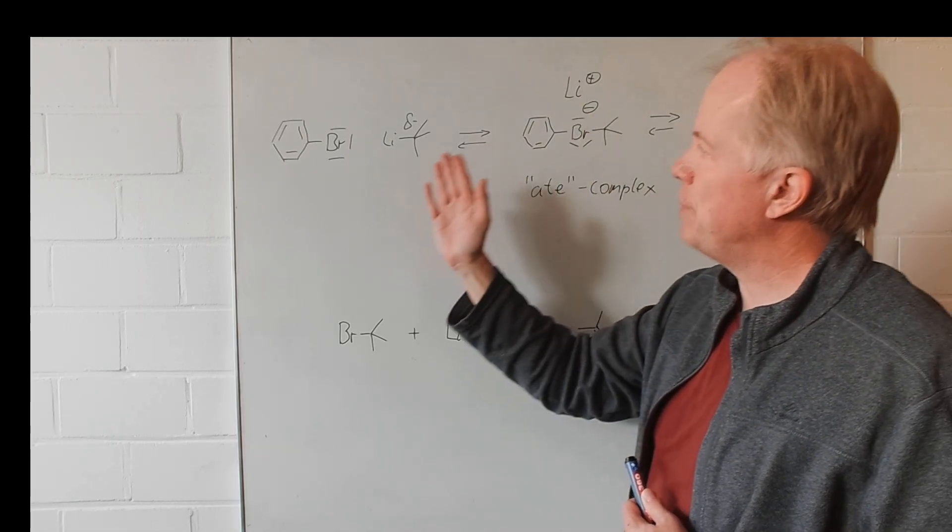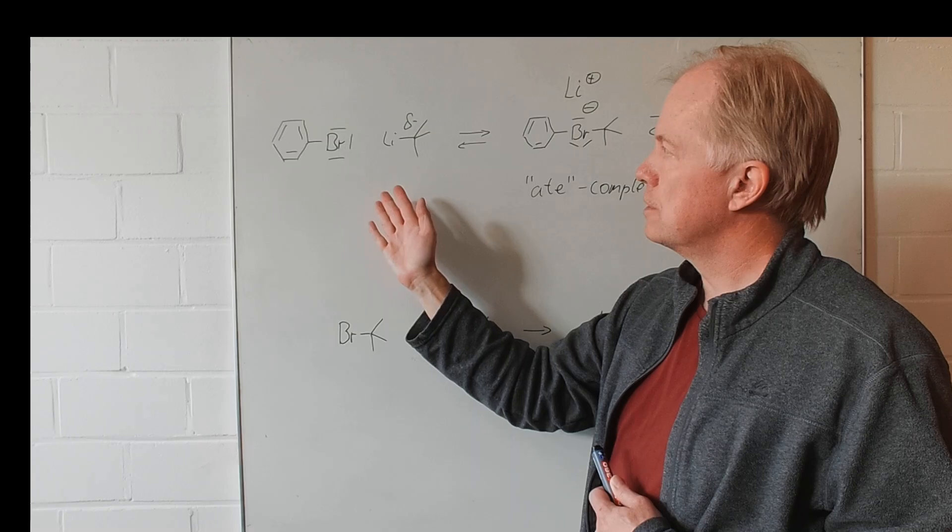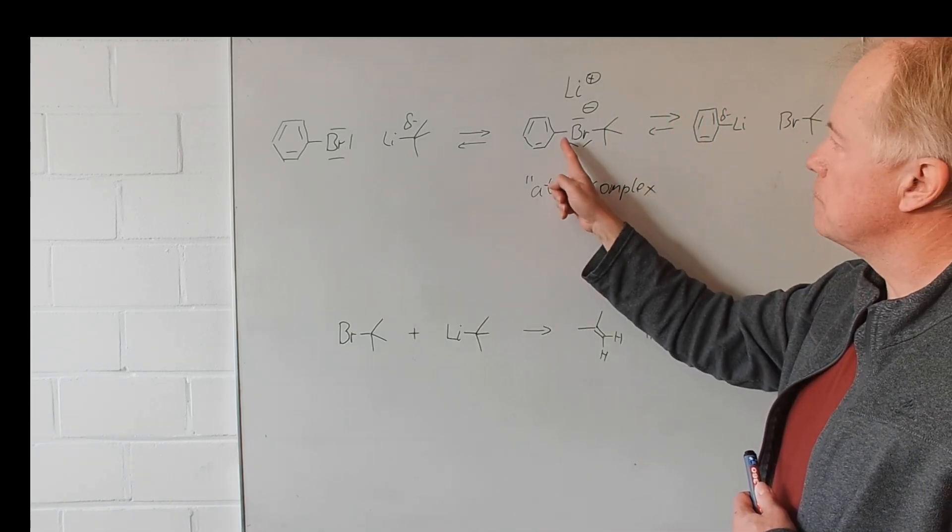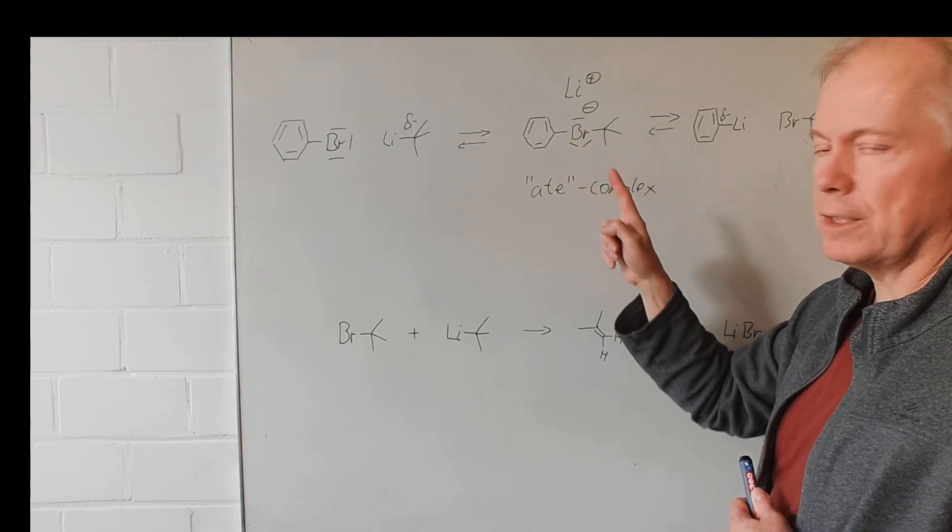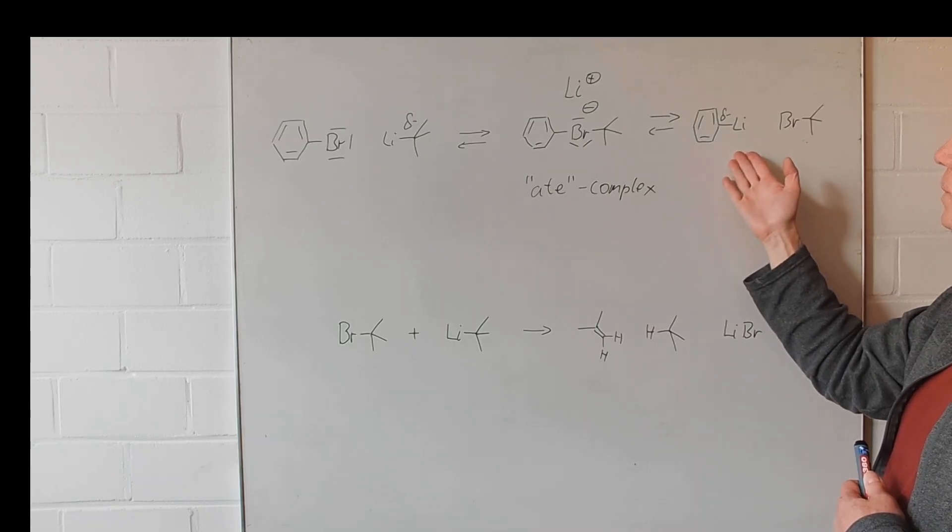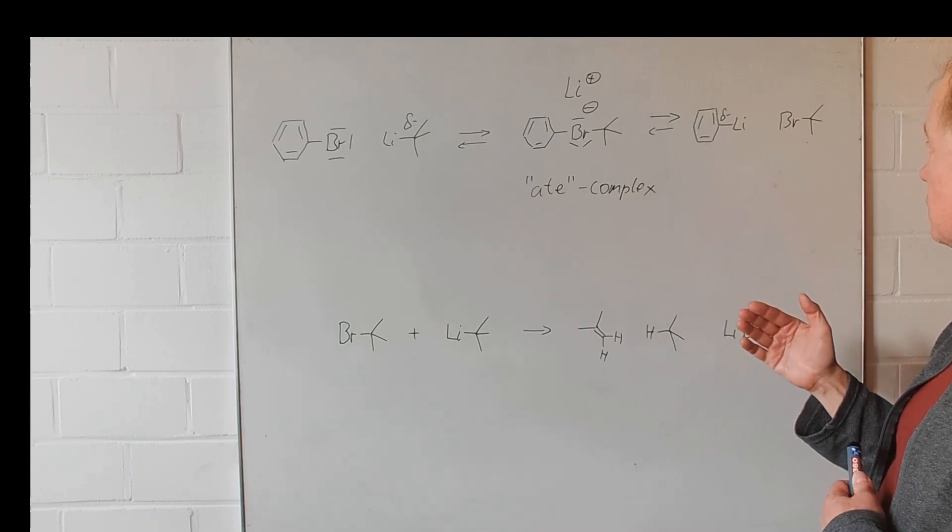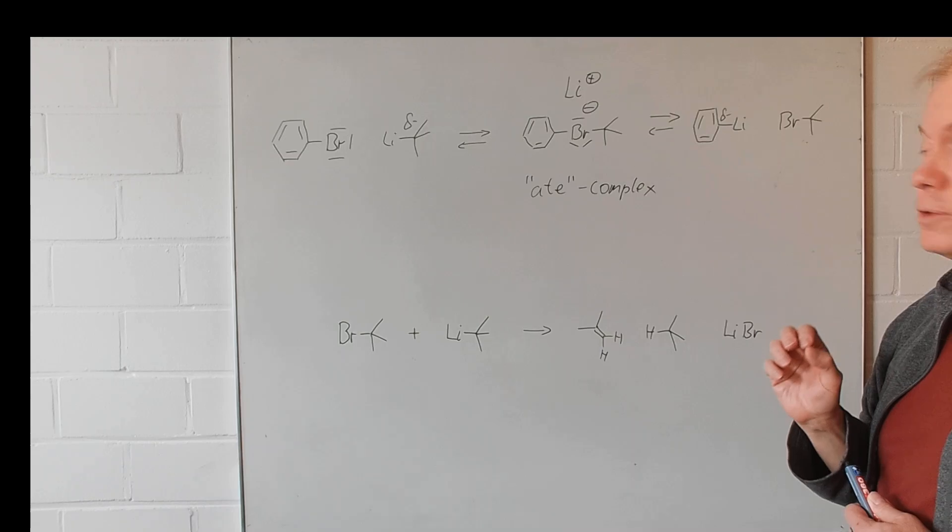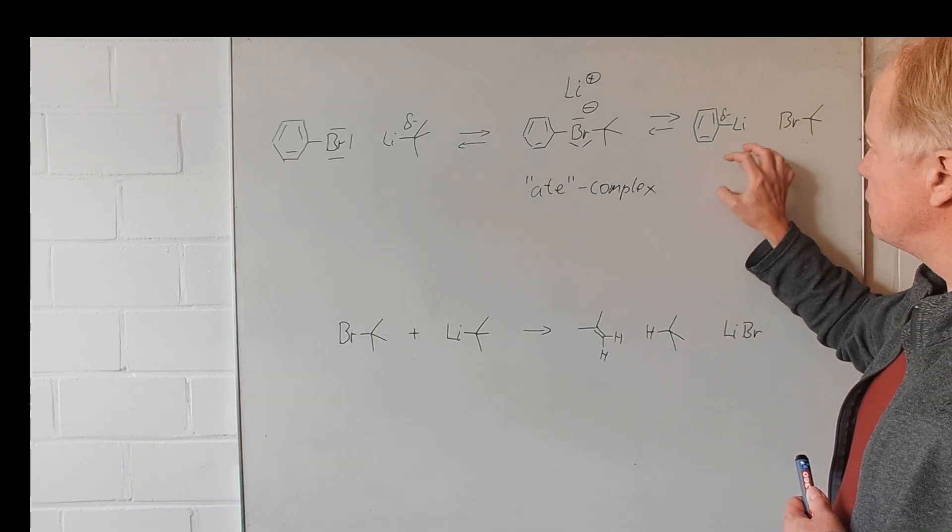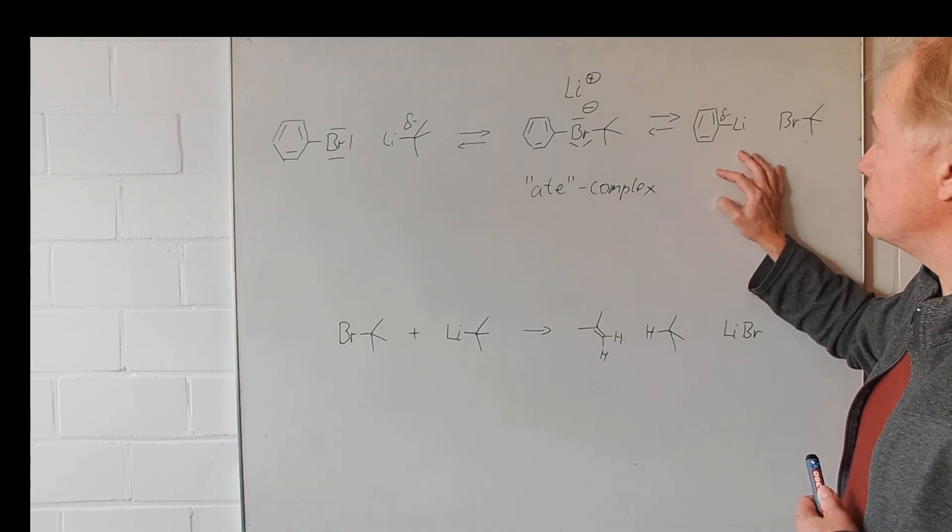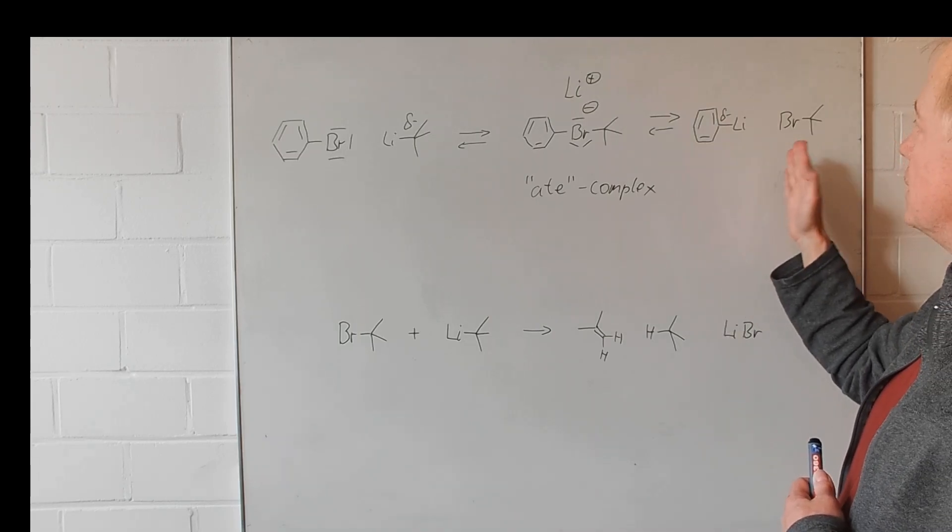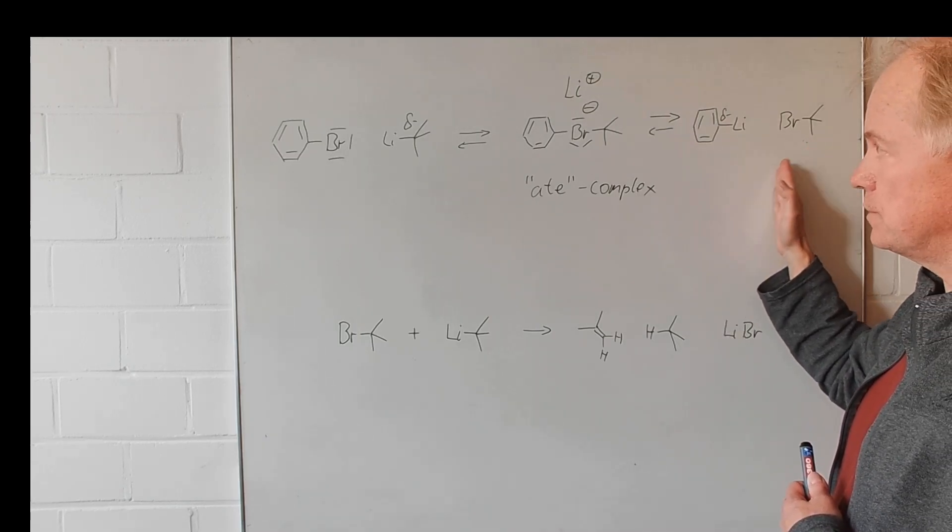Then we get the desired phenyl lithium and tertiary butyl bromide. This situation has a significant advantage. The equilibrium will end up at this site.